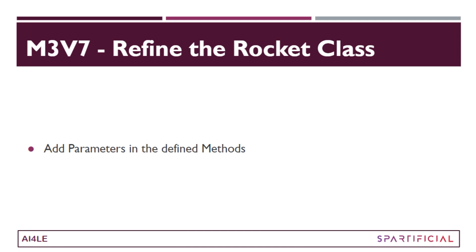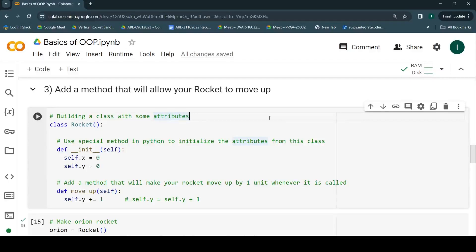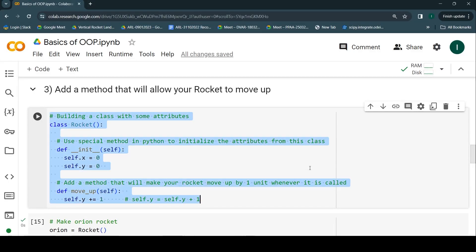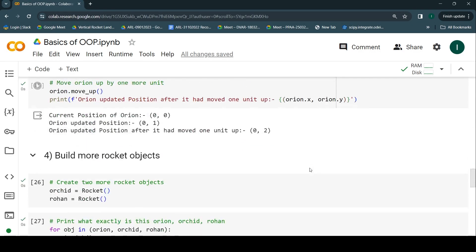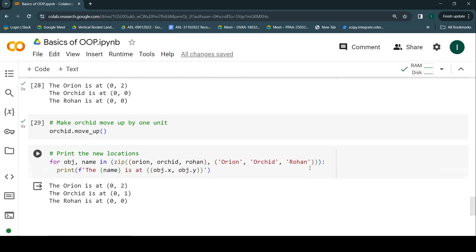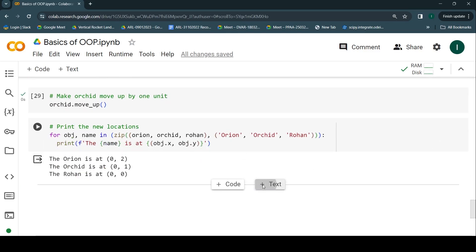Hi everyone, welcome to the seventh video of module 3. Here we're going to refine the Rocket class in a way that gives more abilities to the users — to set up some of the properties of that rocket and also make it move in any kind of direction they want, in whatever units. Let's get into it. Let's copy this Rocket class and spice it up a little bit with some modifications.